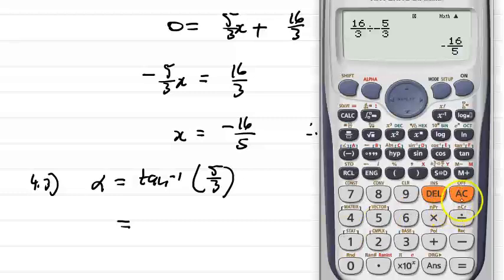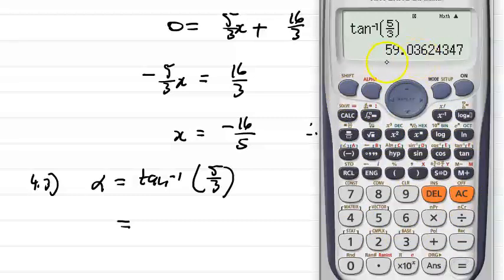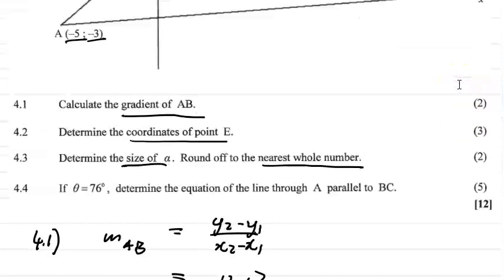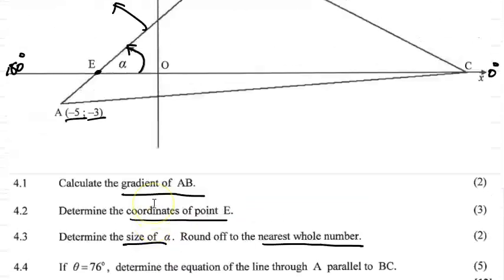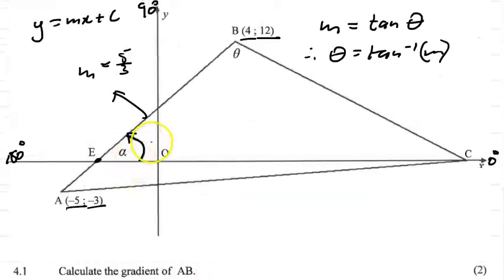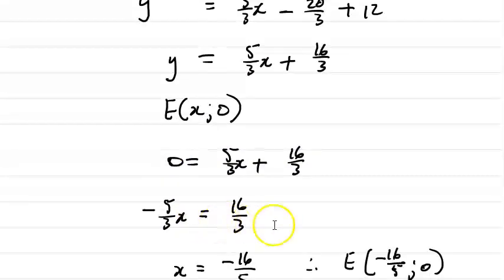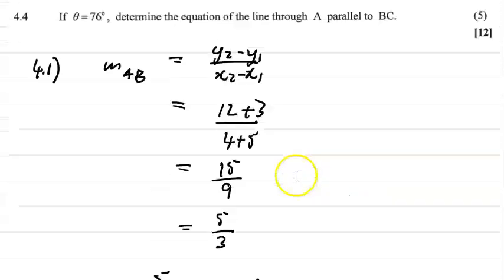Using the calculator: shift tan of 5 over 3, rounded to the nearest whole number, gives 59 degrees. So alpha equals 59 degrees, and the coordinates of E are (minus 16 over 5, 0). Always get into the habit of updating your diagrams.